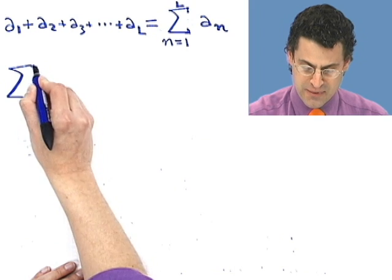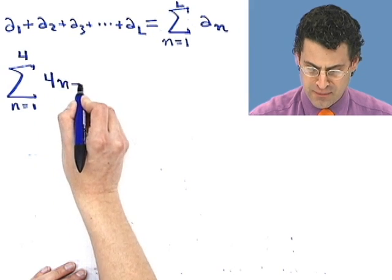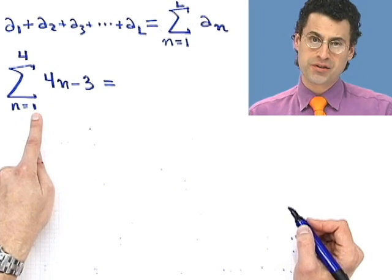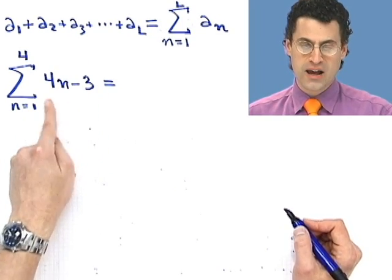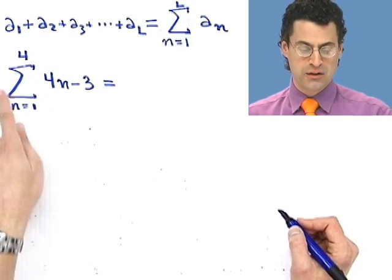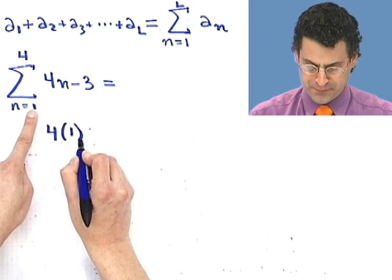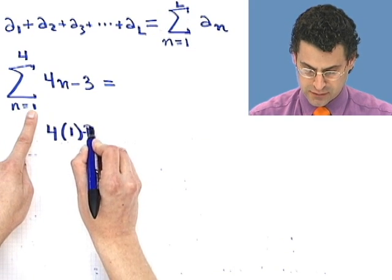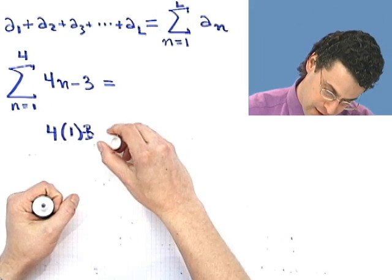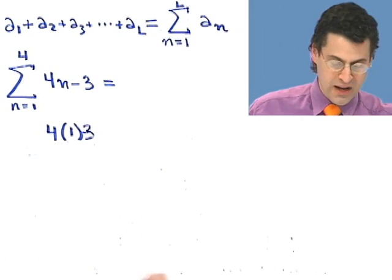So summation n equals 1 to 4 of 4n minus 3. Let's figure out what that means. What that means is I start my counter at n equals 1, and I plug in 1 for n. See what that equals. And then I sum it. I add that to when n equals 2, n equals 3, n equals 4, and then I stop. So what I would see here is 4 times 1 minus 3. It's a minus 3. I was about to do a plus 3, but don't do that. So let's white it out there. Perfect.